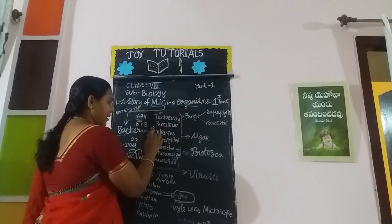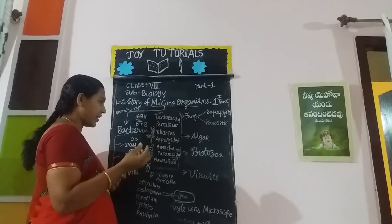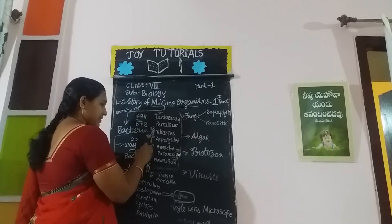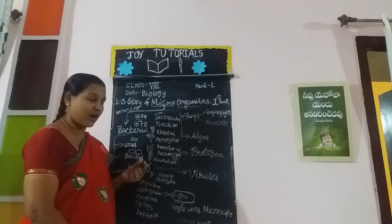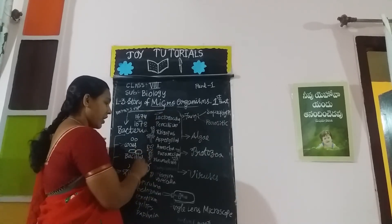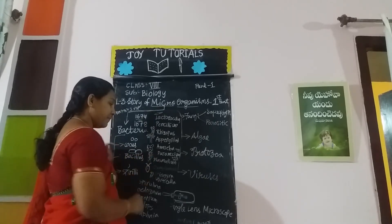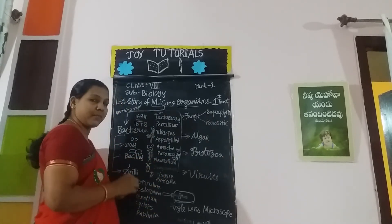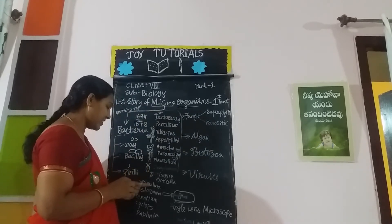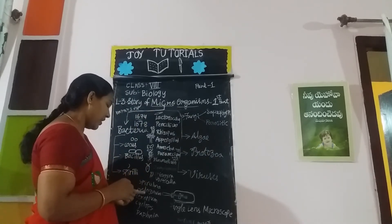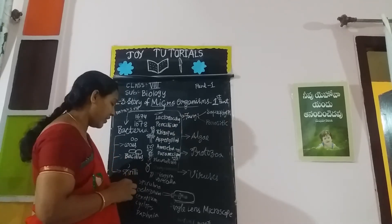Rhizopus is seen on bread as dark color patches. Aspergillus is another such organism. Amoeba is a very small, single-celled organism that can protrude outward; it is about 500 microns in size. Paramecium is slipper-shaped and 0.25 millimicrons in size. Other organisms include Chlamydomonas, Spirogyra, Vorticella, Spirulina, Oedogonium, and Ceratium. All these microorganisms can be found easily with the help of a microscope.